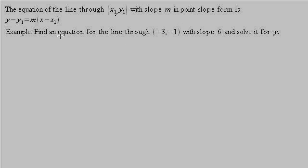So we want to find the equation of a line that passes through the point negative 3, negative 1, and has slope 6. And then once we plug all this into the formula, we want to solve it for y. In this problem, 6 is our slope, so that's m.